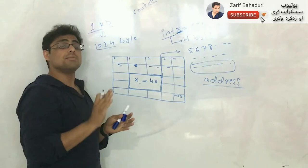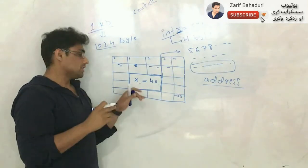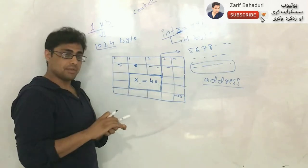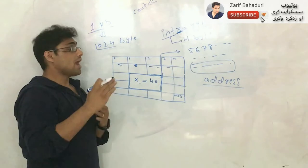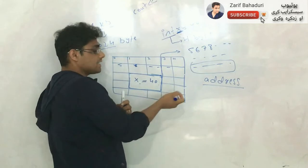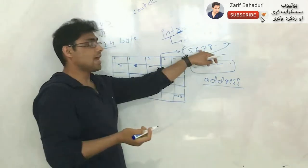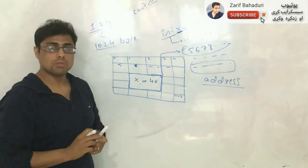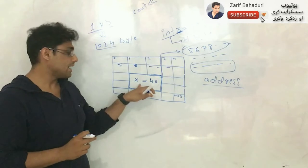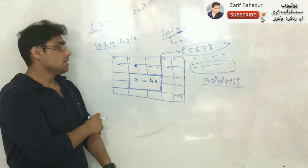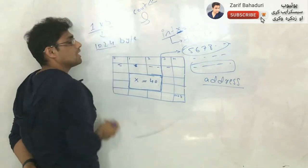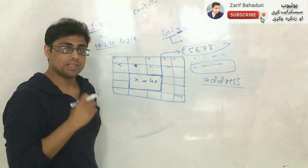Address accessing is easier than using a variable name. Addresses give you more direct access. For example, if I have double x, it can cause confusion. We need to have access to the address — how to access a variable through its address — using the address-of operator.